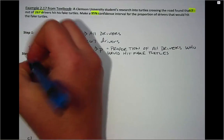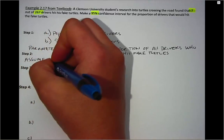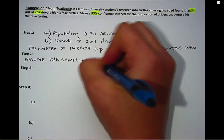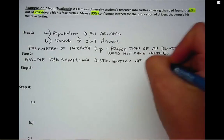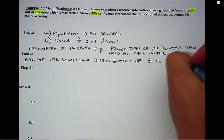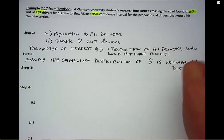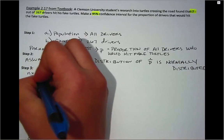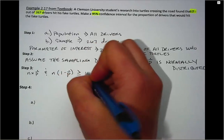In step two we state our assumptions, and our assumption is always the same for this chapter. We assume that the sampling distribution of P-hat is normally distributed, but we can only make this assumption if our conditions are met. The conditions are that n times P-hat and n times (1 minus P-hat) both have to be greater than or equal to 10.